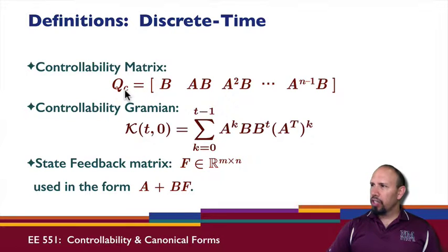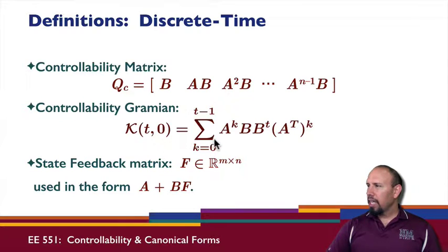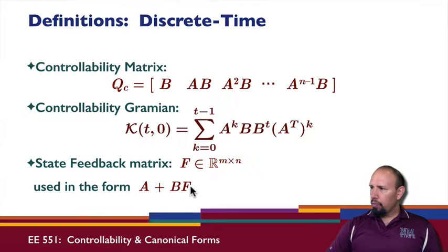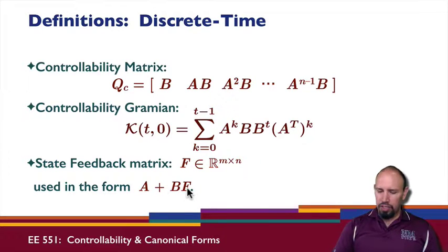We have the controllability matrix Q_C, which is [B, AB, A²B, ..., A^(N-1)B]. This has N block columns in general. We have the controllability Gramian, which is a finite summation. We also have a state feedback matrix: if we have some matrix F of the appropriate dimension, we form the matrix A + BF, which is called the state feedback matrix. Later on, one of the control methods we'll employ is state feedback.